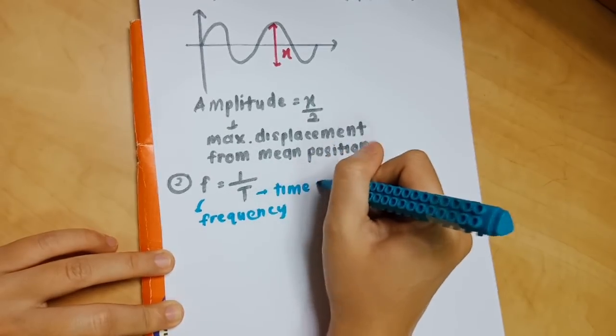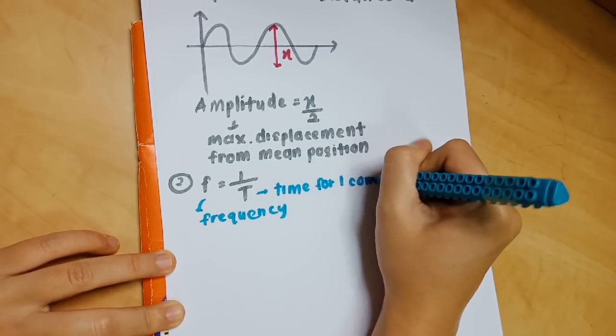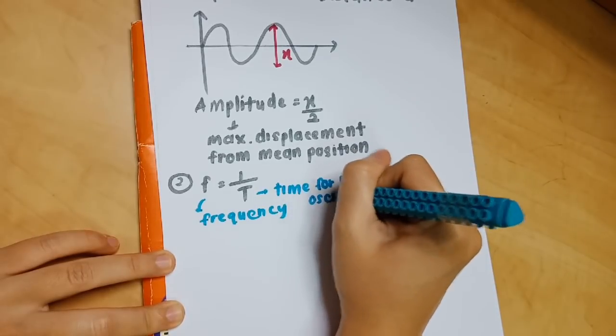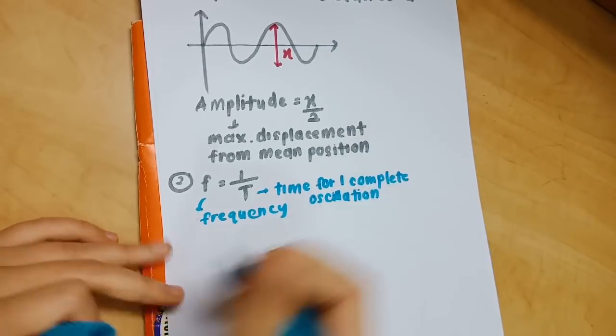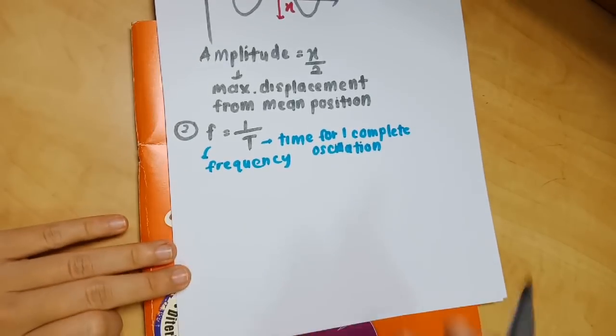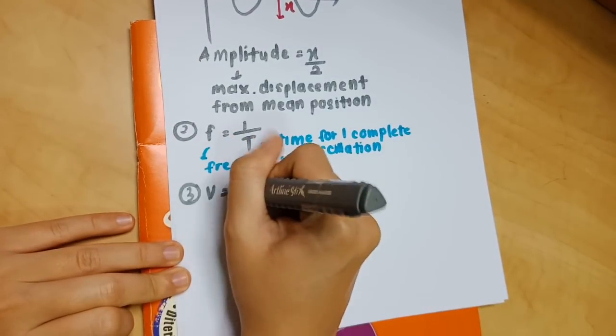Number 3: v equals f lambda. V refers to velocity, f is frequency, and lambda is wavelength.